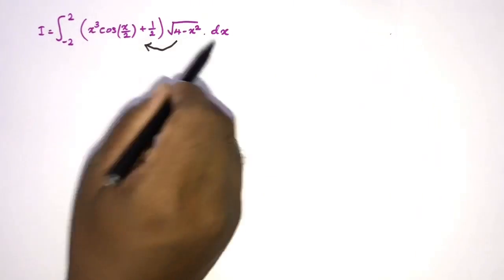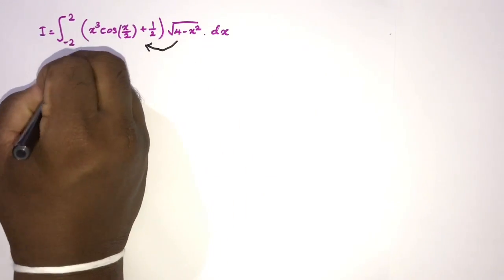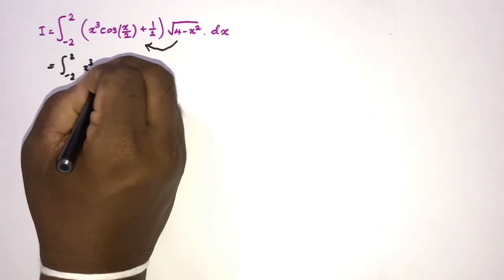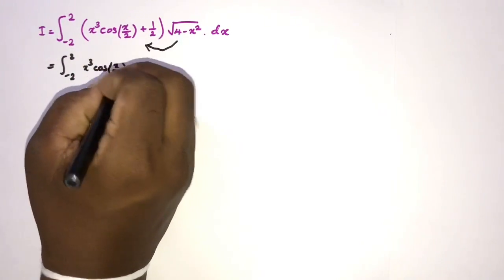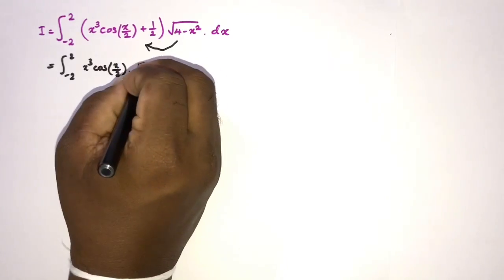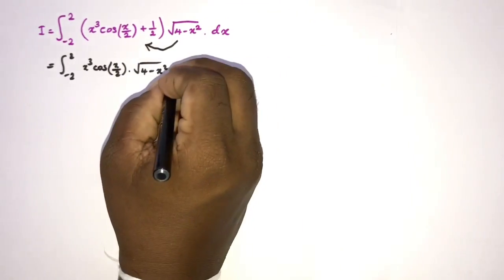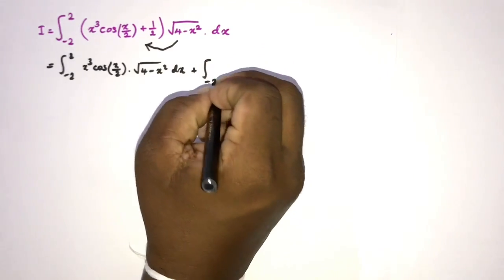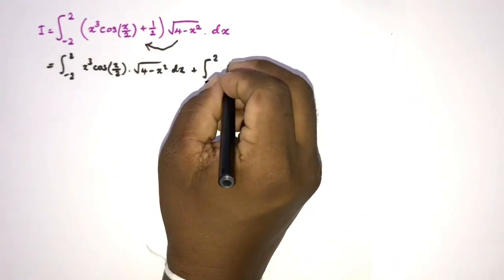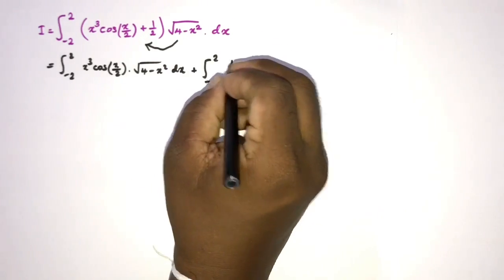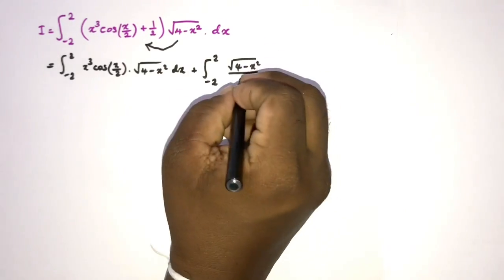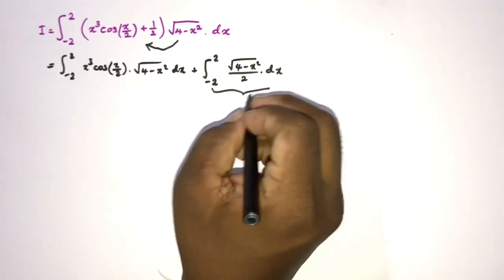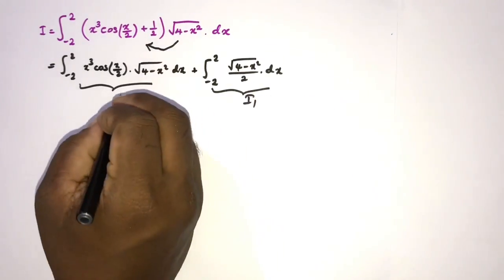We can split this integral into two different integrals. The first is the integral from minus 2 to 2 of x cubed cosine of x over 2 times the square root of 4 minus x squared dx. The second is the integral from minus 2 to 2 of one half times the square root of 4 minus x squared, divided by 2, dx.